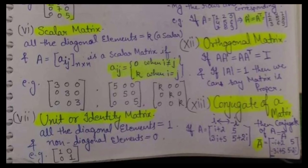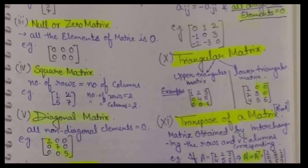Next type of matrix is the unit or identity matrix. It is a diagonal matrix in which the principal diagonal elements will be non-zero while all other elements except the principal diagonal elements will be 0. As you can see in the example, the principal diagonal elements will be equal to 1 in this case. This type of matrix is known as the unit or identity matrix, and its determinant will be equal to 1.